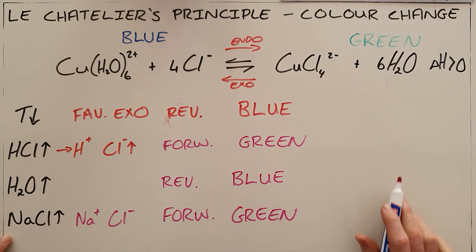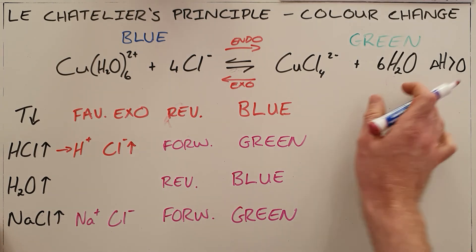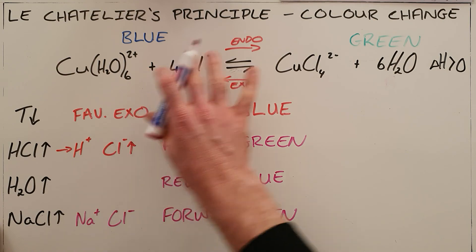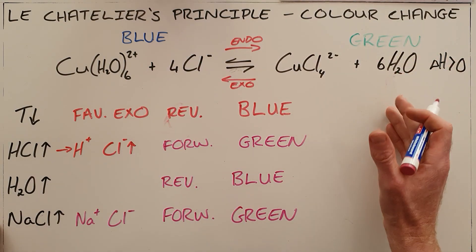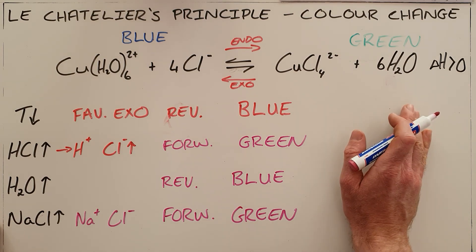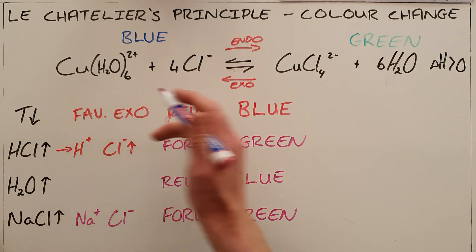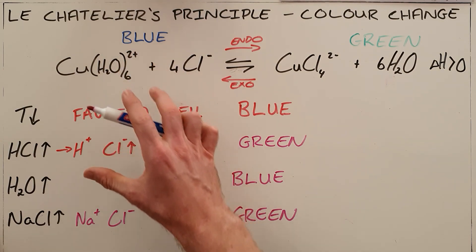So color change is just another way of testing Le Chatelier's principle. They are essentially asking you to say if we are favoring the forward reaction, we are producing more green, so the reaction solution becomes more green. If we favor the reverse reaction, the reaction becomes more blue.